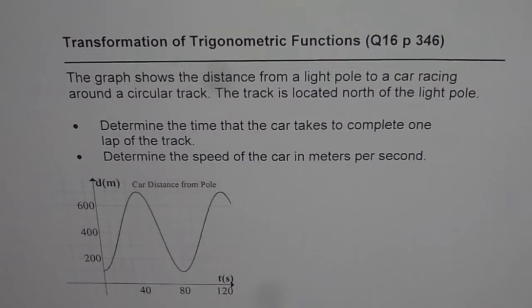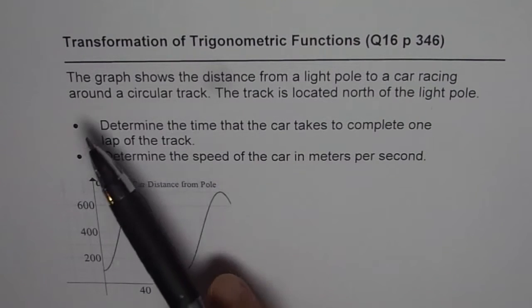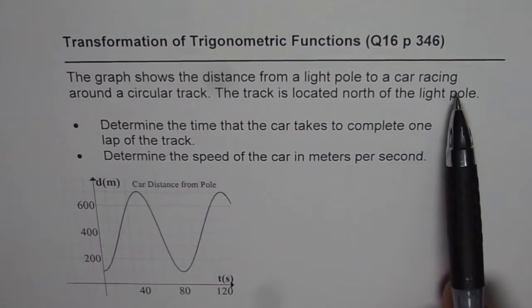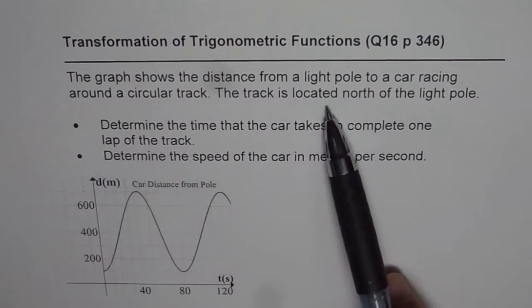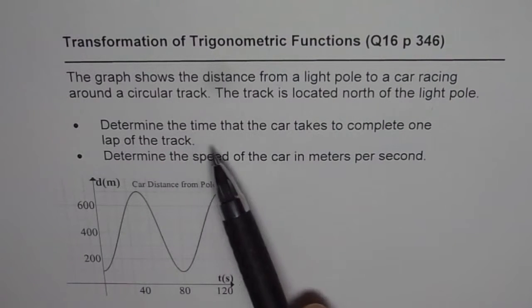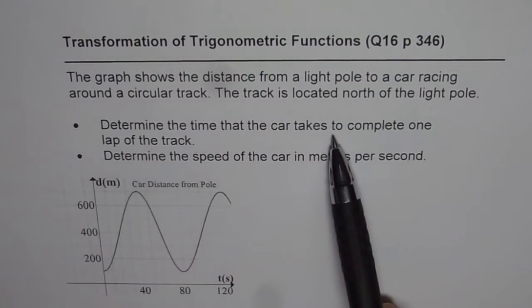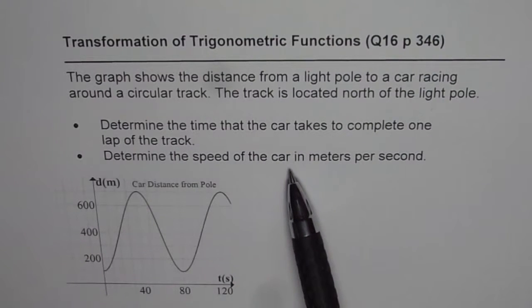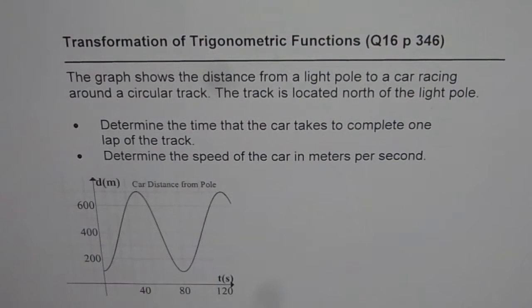I'm Anil Kumar and here is the second question from my student Maria. The question is question number 16, page 346 from Nelson Advanced Functions. It says the graph shows the distance from a light pole to a car racing around a circular track. The track is located north of the light pole. Determine the time that the car takes to complete one lap of track. Determine the speed of the car in meters per second.